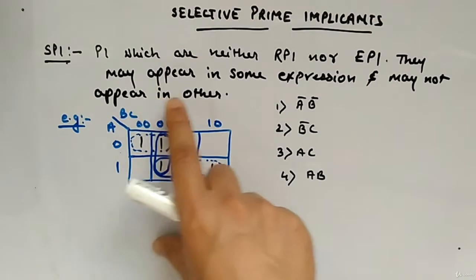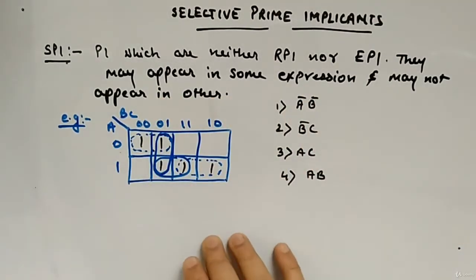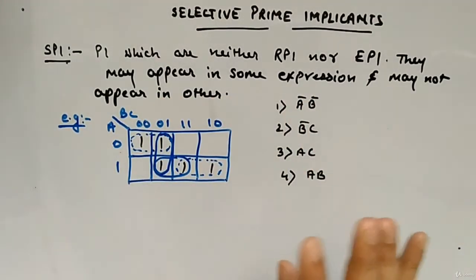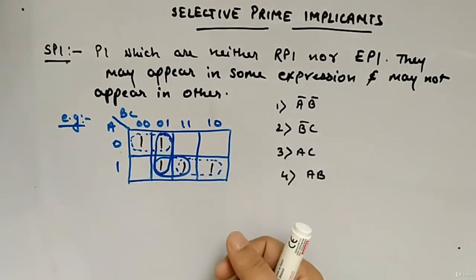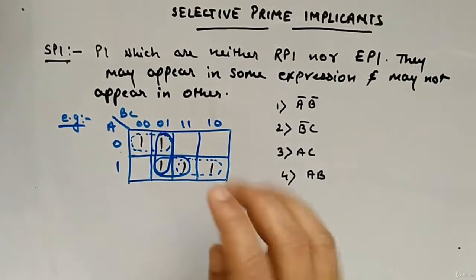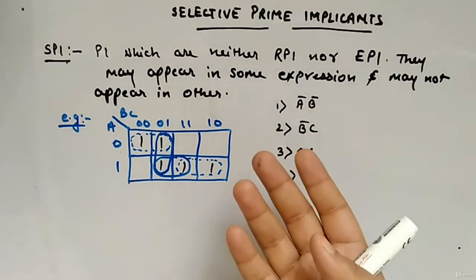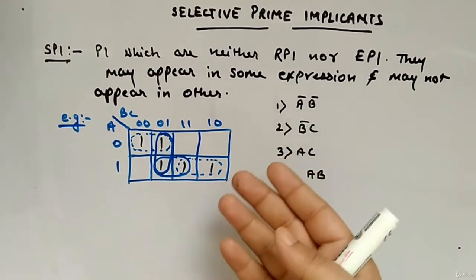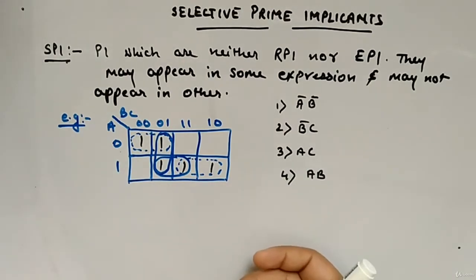Selective prime implicants may appear in some expressions and may not appear in others. So it really means you have to check in the K-maps whether they exist or not. Sometimes they occur, sometimes they don't. So it's really not necessary that you will find an SPI all the time in the K-map.